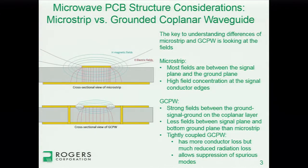Before getting into that, it's good to think about the fields, because understanding how the fields behave is a good basis for understanding the fabrication influences on these structures. In the case of microstrip, you have a strong concentration of fields between the signal plane and the ground plane. You also have a concentration of fields at the corners of the signal conductor, and the current density at the corners is higher too — I'll talk about that a little bit later.